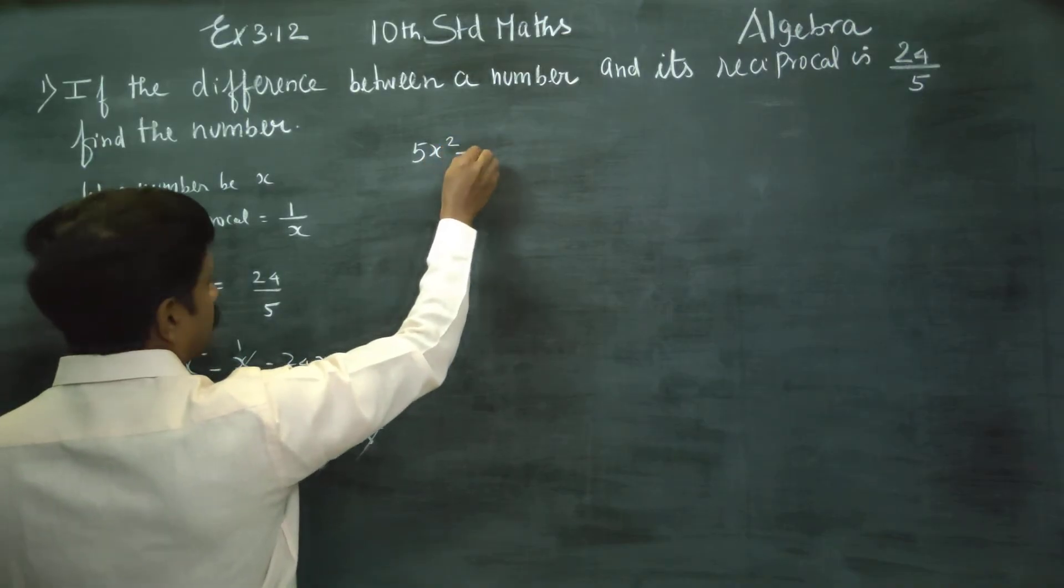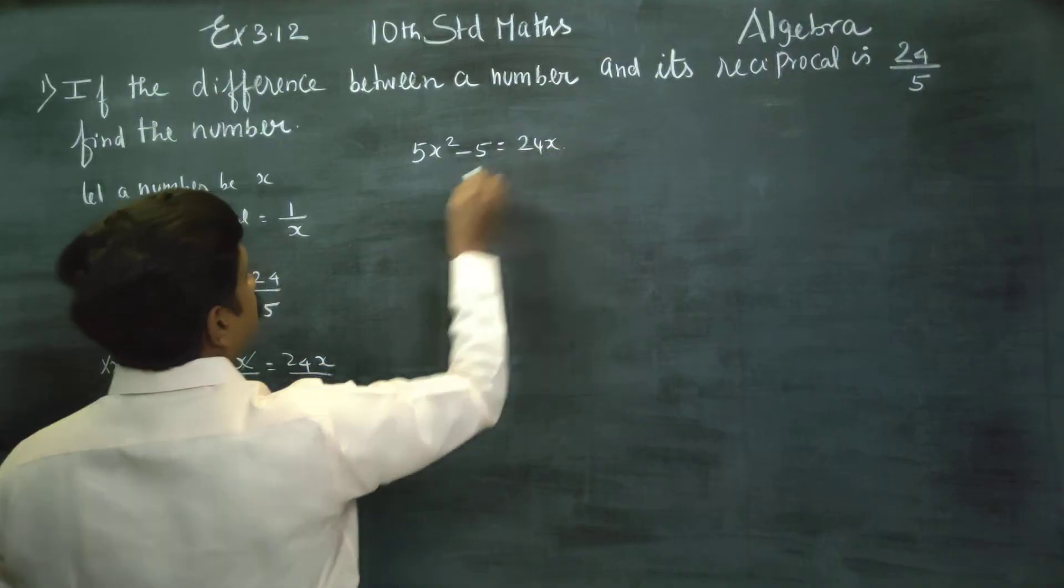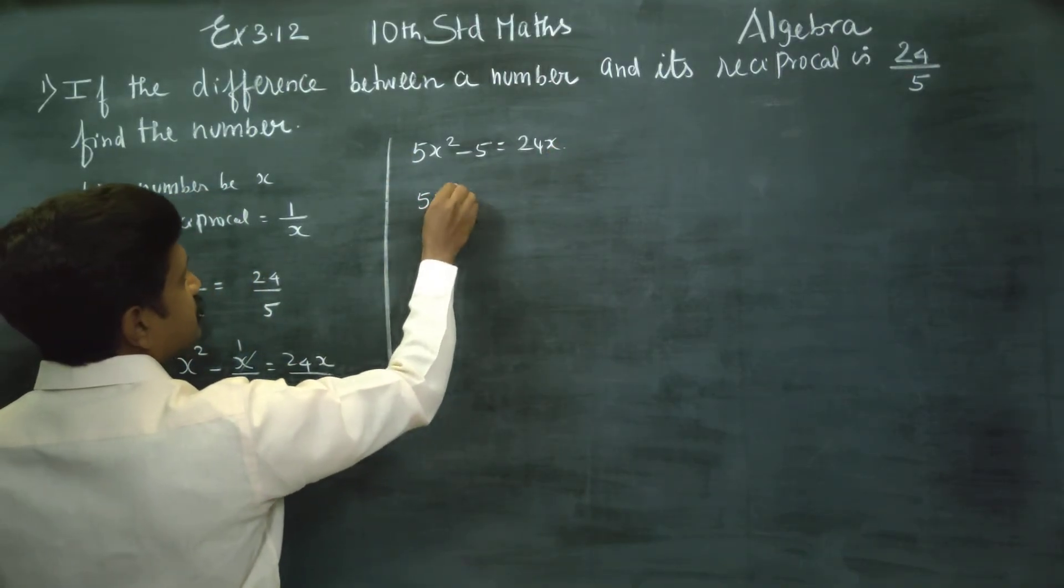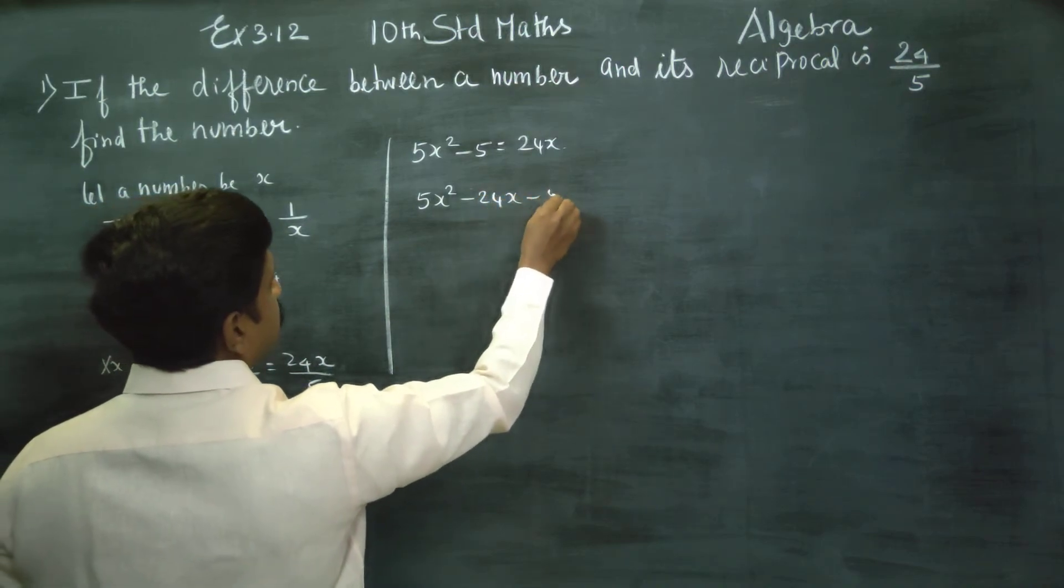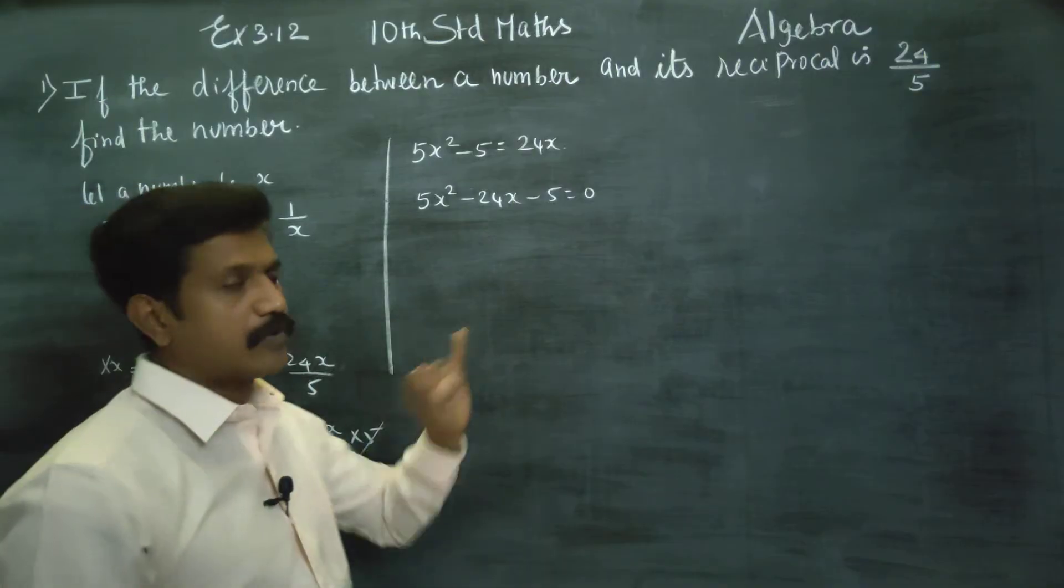5x square minus 5 is equal to 24x. Rearranging the equation: 5x² - 24x - 5 = 0.